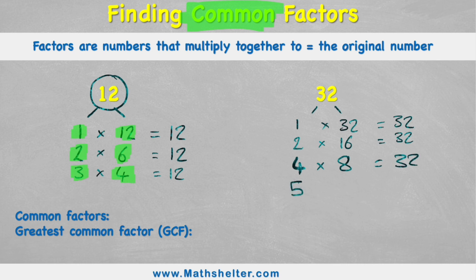Now we can try 5. Well 5 doesn't work because I can't multiply anything with 5 to get to 32. So 5 doesn't work. Let's try 6, and again 6 doesn't work because it would be 6, 12, 18, 24, 30 and then 36, so it skips 32. 7: 7, 14, 21, 28, 35, so 7 doesn't work.